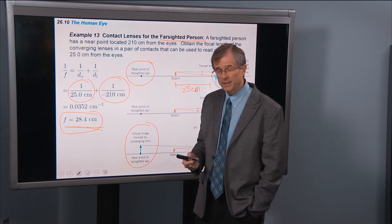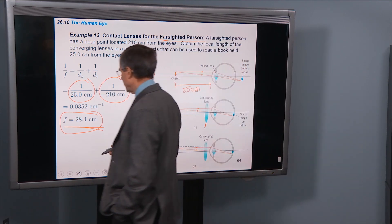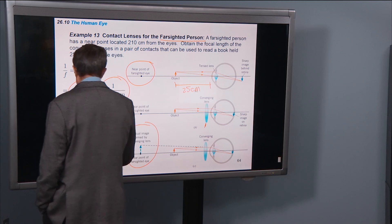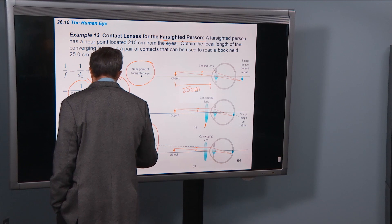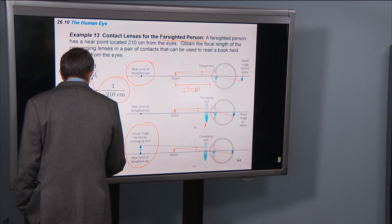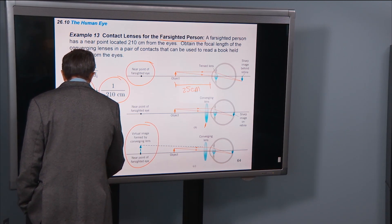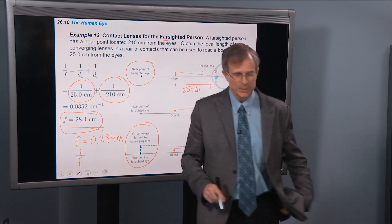So if you wanted to find the refractive power in that case, the diopters, then you'd express this focal length in meters. And then you take 1 over that to get that refractive power measured in diopters.